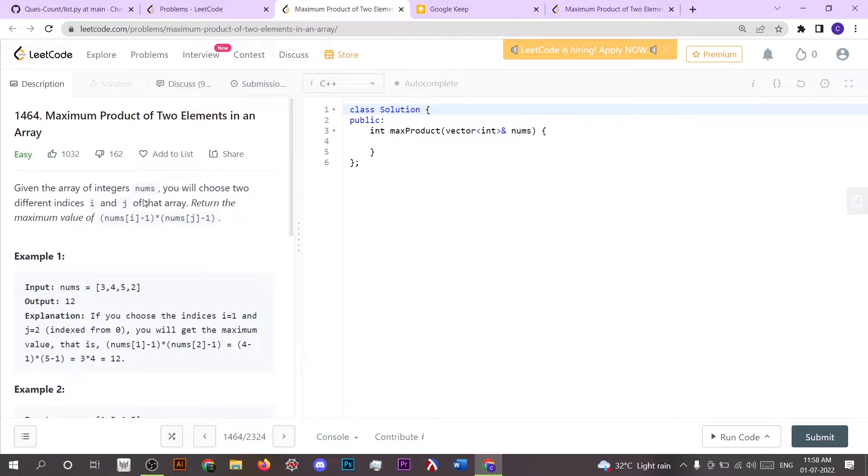Hello everyone, it's really good to see you here. Today we're going to solve a LeetCode problem which is maximum product of two elements in an array. Here we have given an array and we have to find the indices i and j which have to be different in the array.